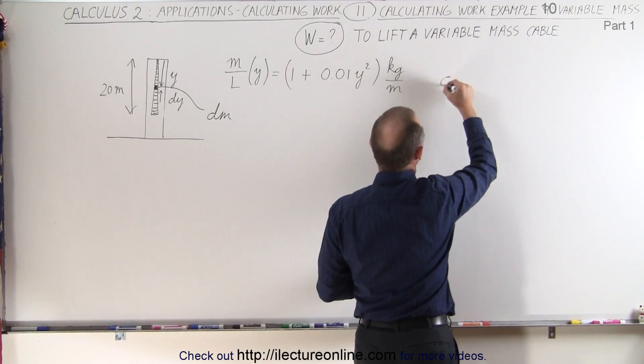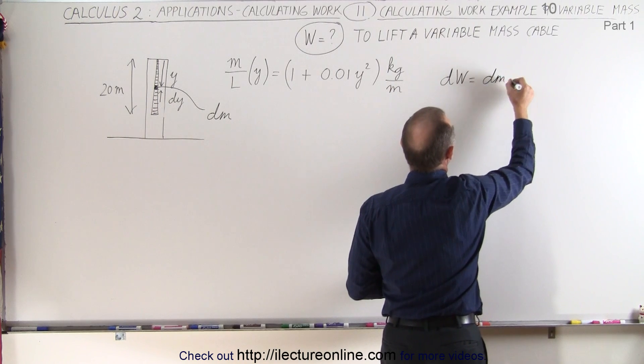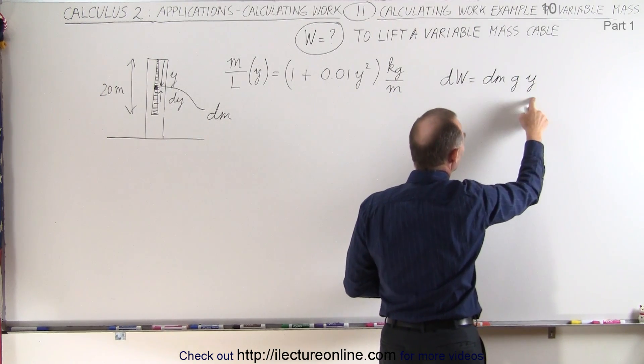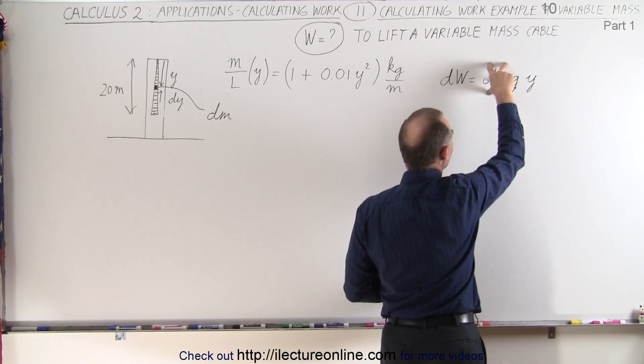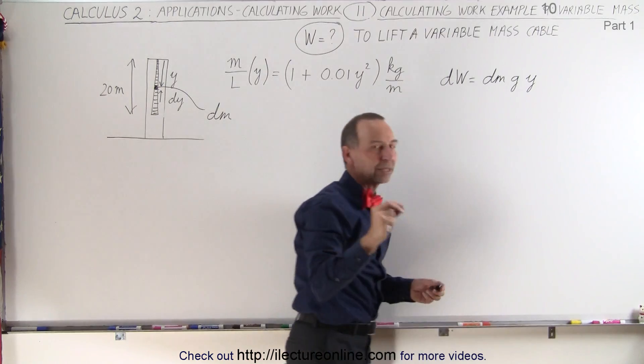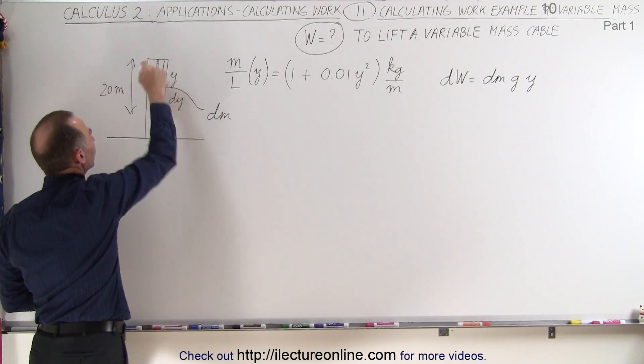So a small amount of work, dw, is going to be equal to a small amount of dm times g times the height to which we lift. It's mgh, but in this case it's a small dm, times g times the distance y that we lift that particular dm, that small portion of the cable to the top.